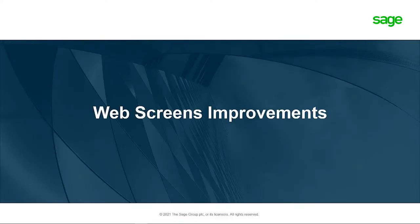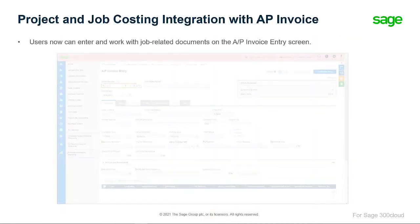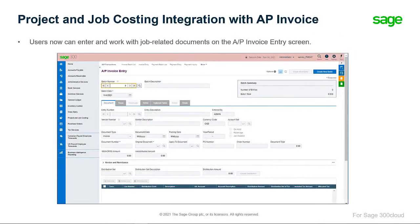First, let's have a look at web screens improvements. If you use Sage 300 Project and Job Costing to manage contracts, you can now use the web screens to work with job-related documents in Accounts Payable. The Accounts Payable Invoice Entry screen includes a job-related option.